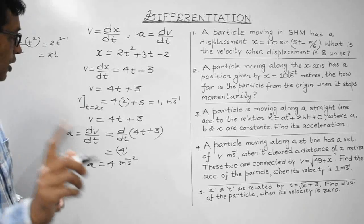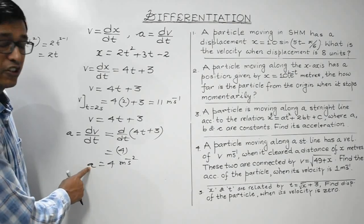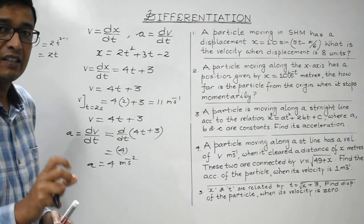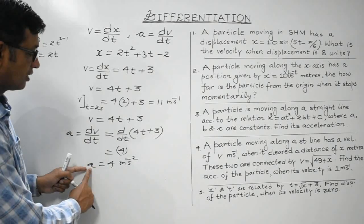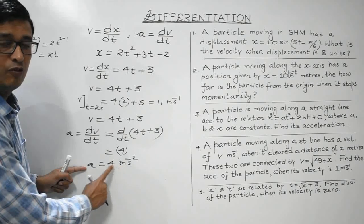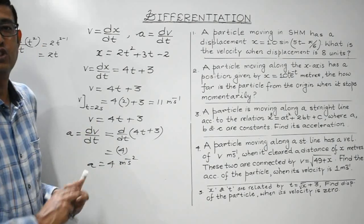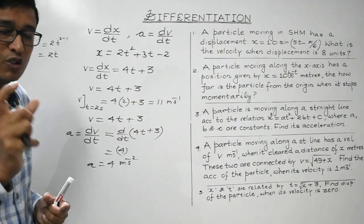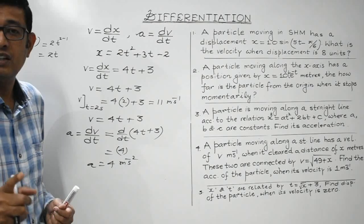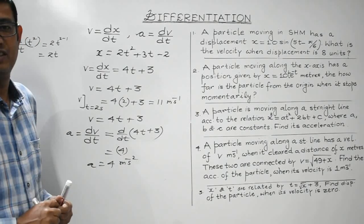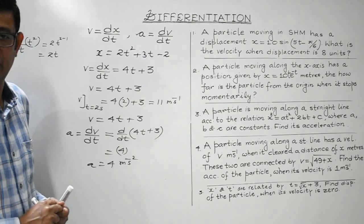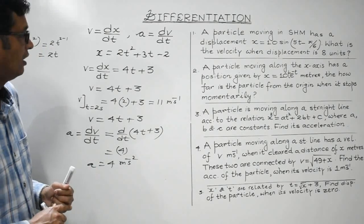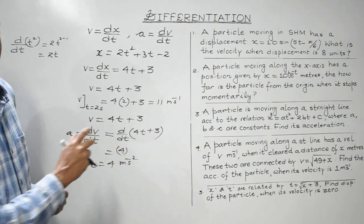The key point here is that acceleration is independent of time. Whether t = 1, 2, or 3 seconds, the acceleration remains 4 m/s². Since acceleration is constant, the nature of motion of the body is uniformly accelerated motion — where the velocity changes at a constant rate. This is a pure application of differentiation.